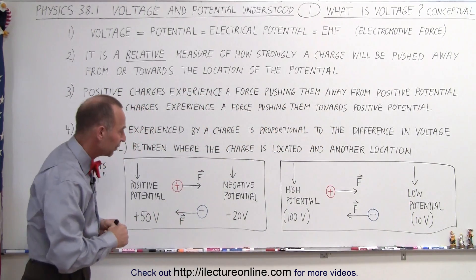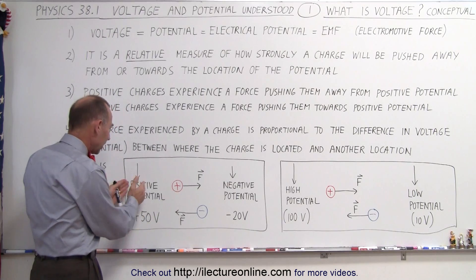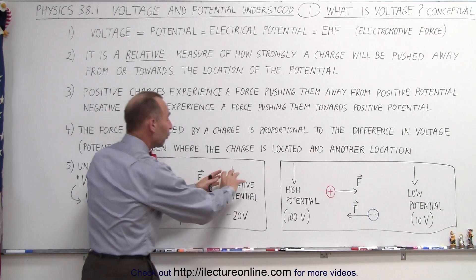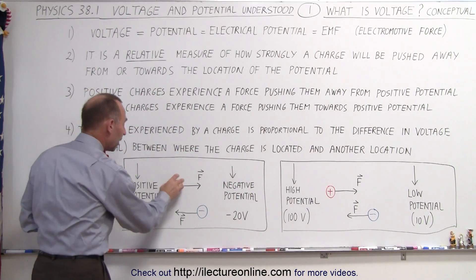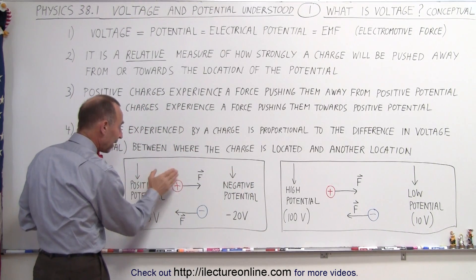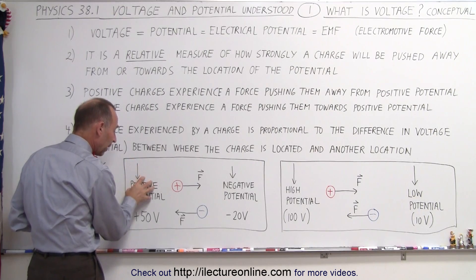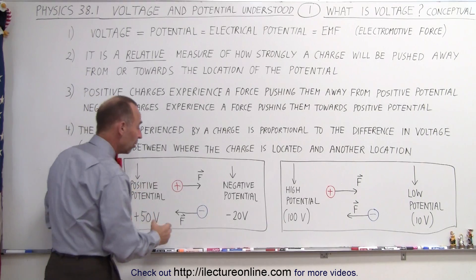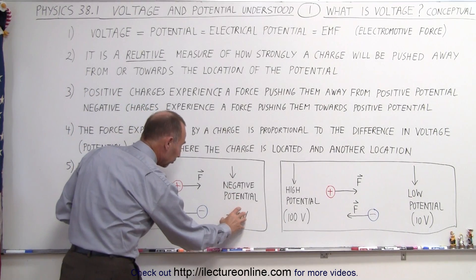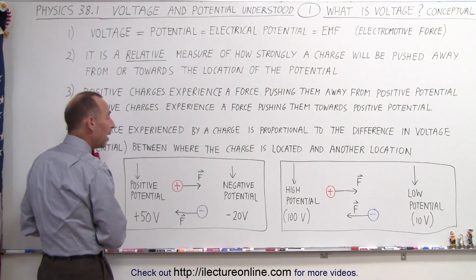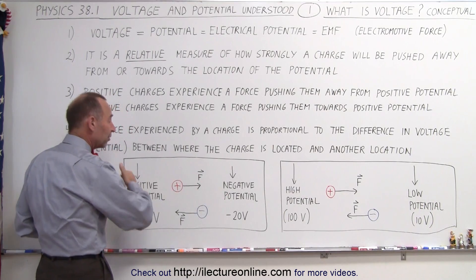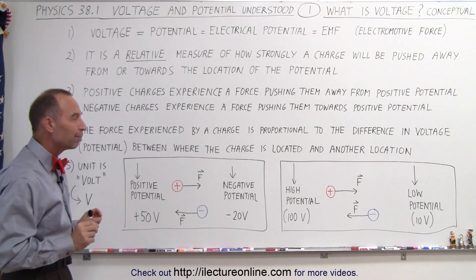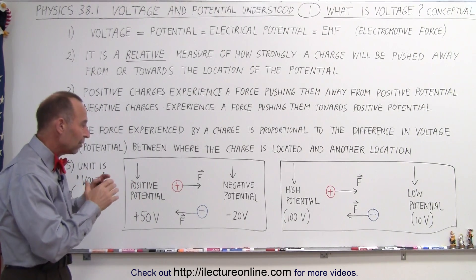We can also have negative potential. Here we have a location where the potential is positive and here where the voltage is negative. Positive charges will be pushed by a force from where there is a positive potential towards where there is a negative potential. And negative charges will be pushed from places where there is a negative potential towards places where there is a positive potential — from negative to positive, from positive to negative, or from high to low or low to high. It really means the same thing.